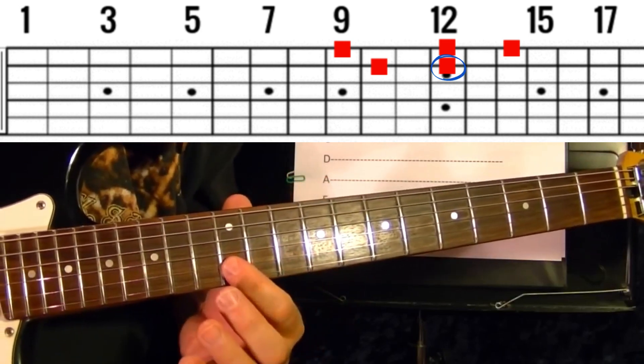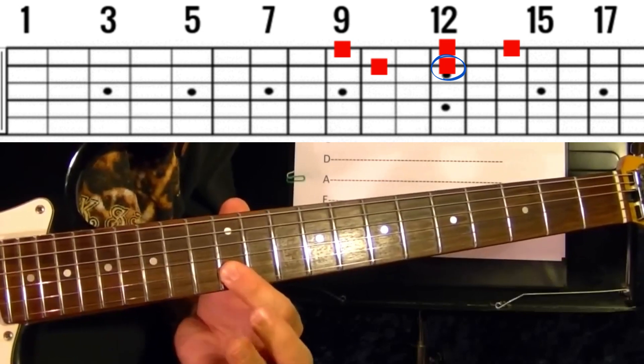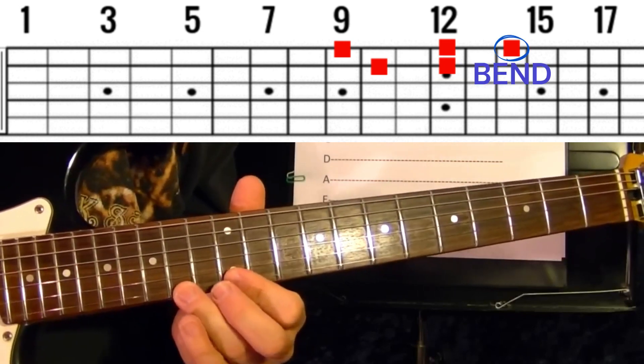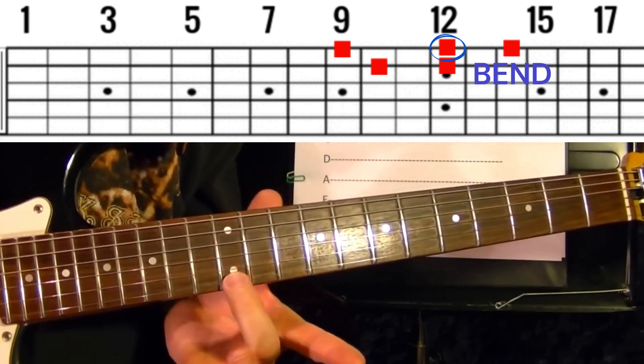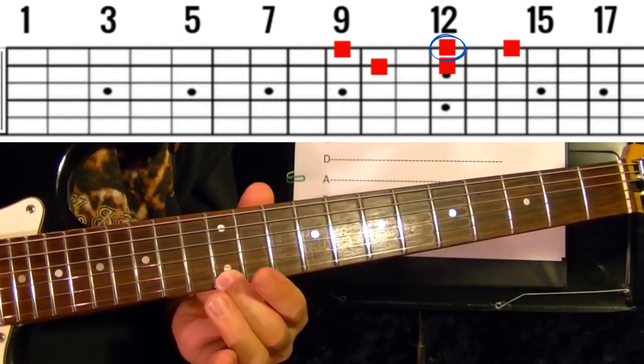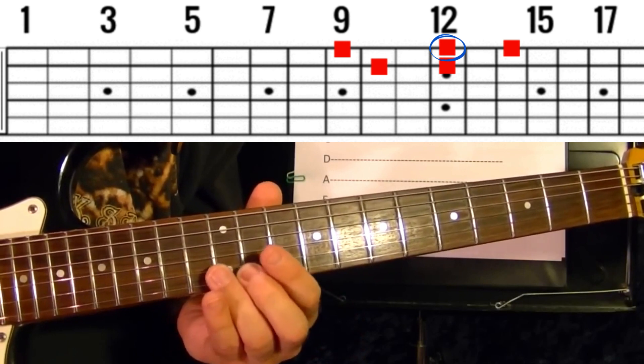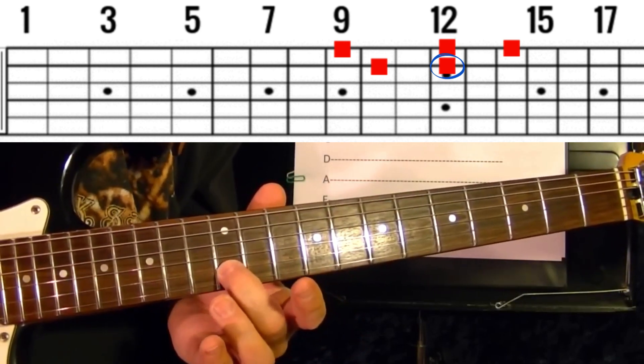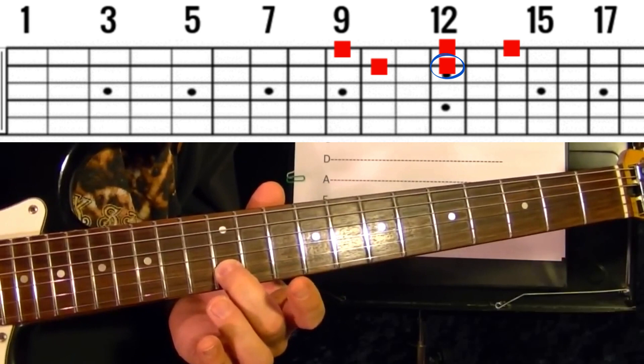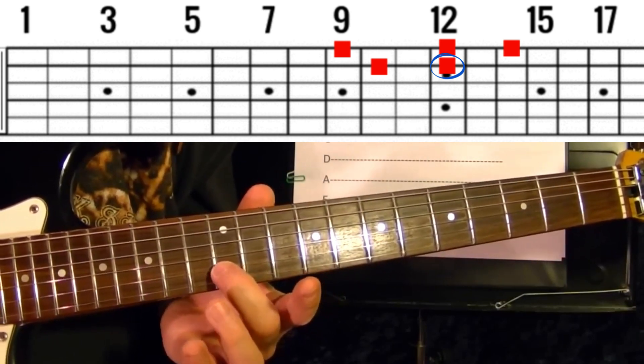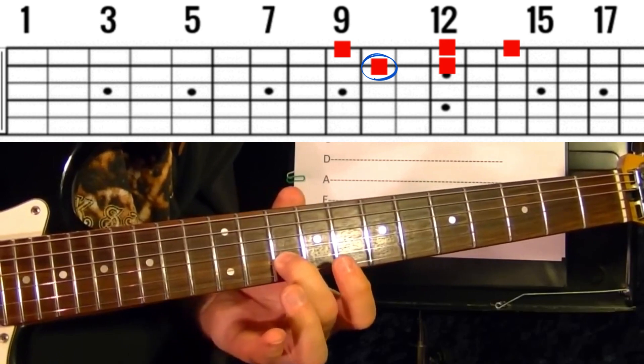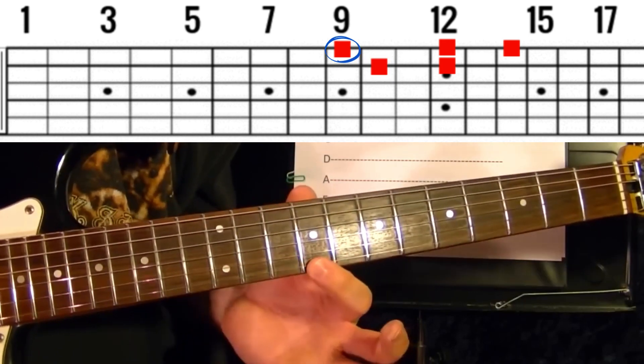Second string twelfth fret, first string 14th bend it up, first string twelfth, second string twelfth, twelfth again slide down to 10th, first string 9th fret.